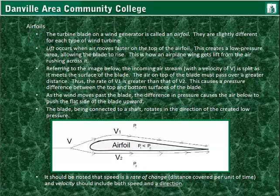Moving to airfoils — a turbine blade on a wind generator is called an airfoil. They're slightly different for each type of wind turbine. This shows how lift works, similar to an airplane wing, where wind comes in at a certain speed. It's forced to go over the top and some under the bottom. The air passing across the top travels a greater distance across the airfoil, creating lower pressure on top. On the bottom, the pressure is greater, and this causes lift.